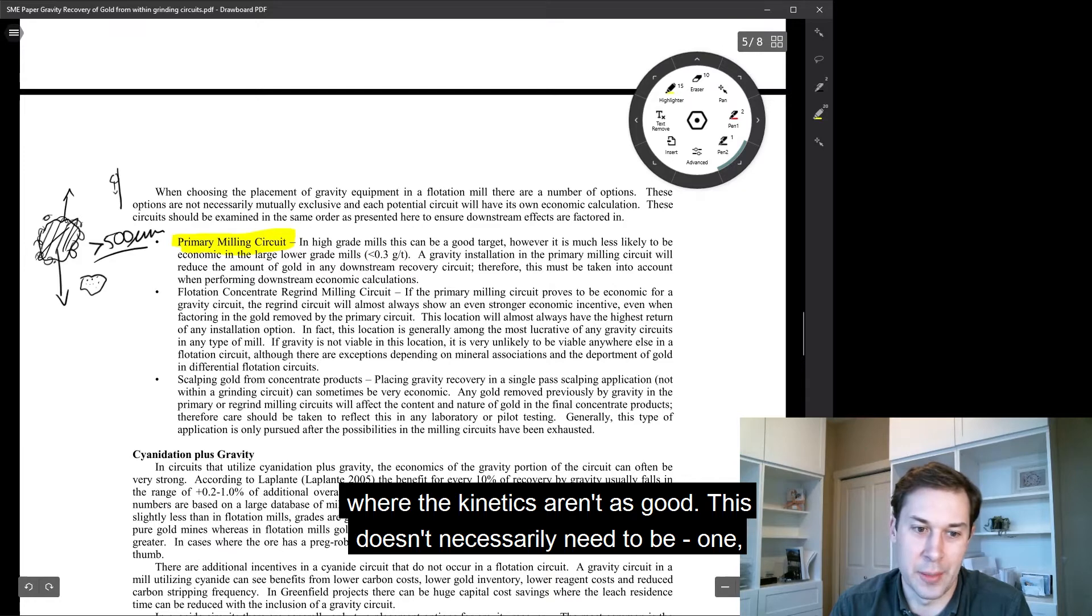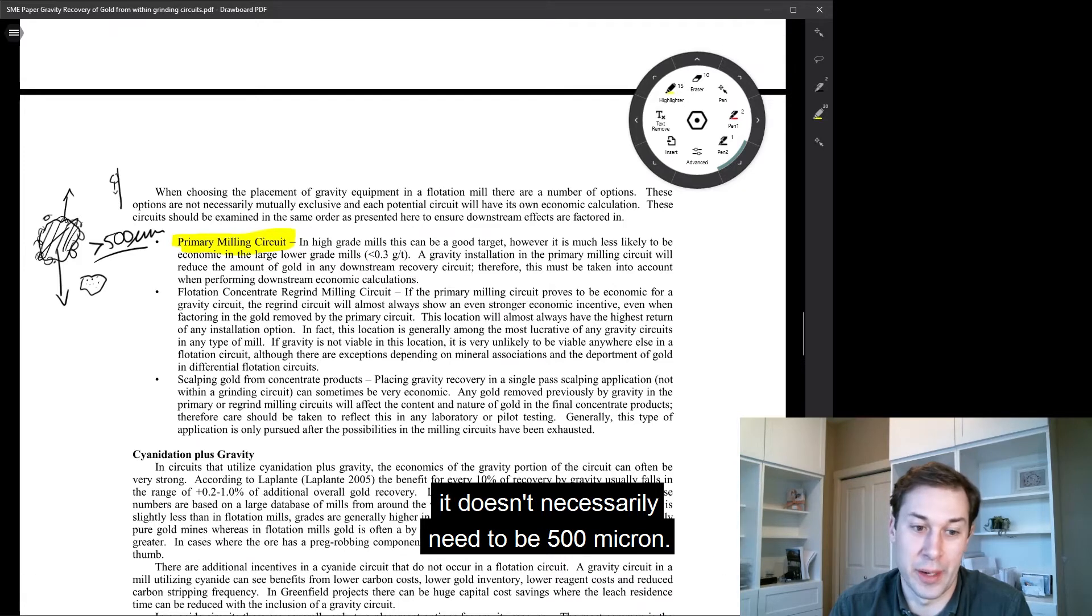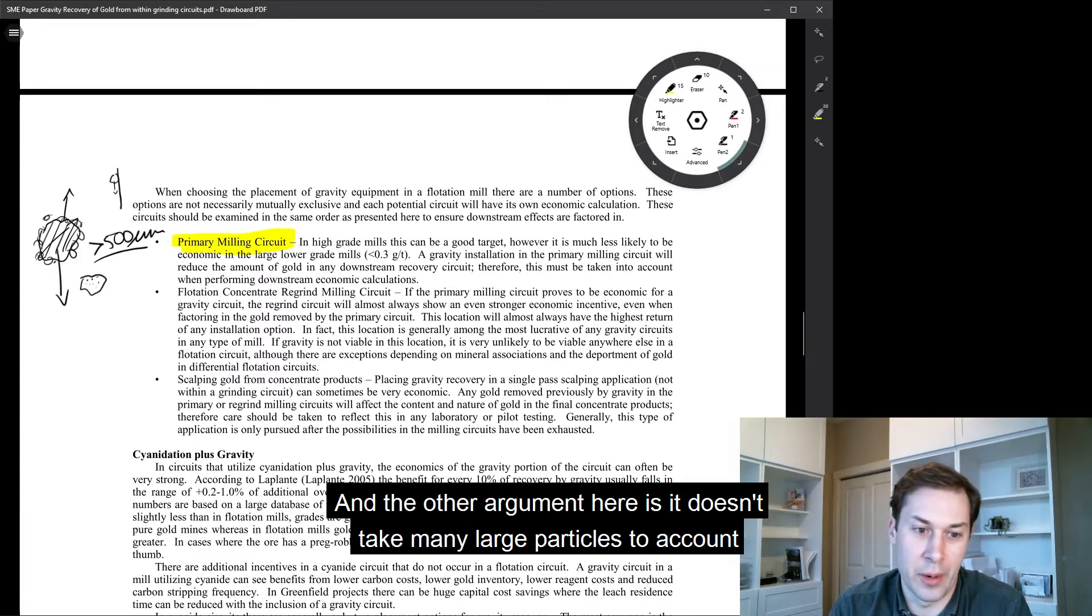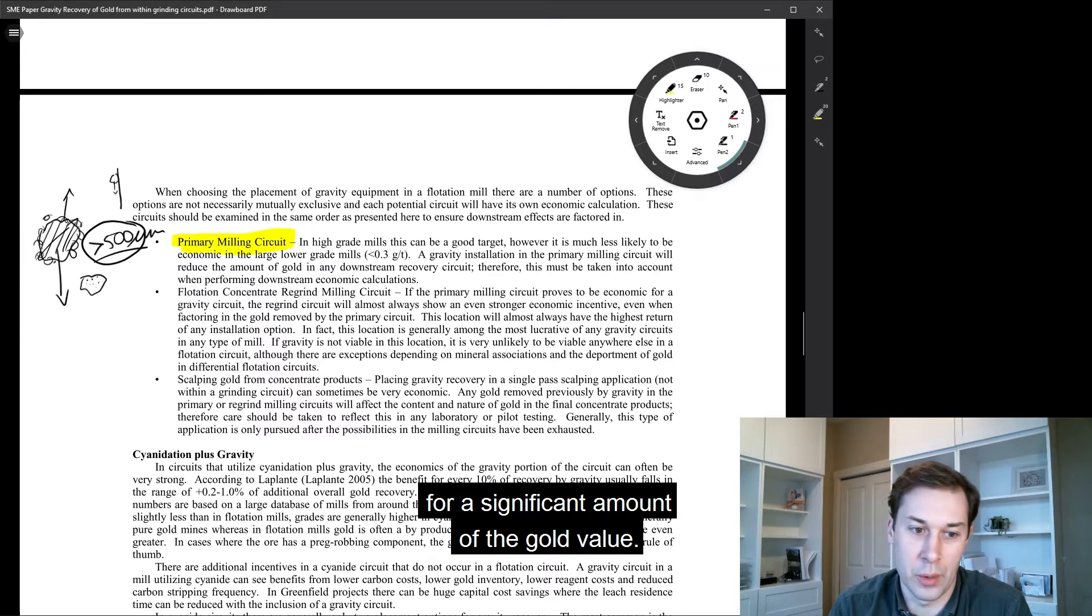And this doesn't necessarily need to be 500 micron. This could be much smaller than this. And the other argument here is it doesn't take many large particles to account for a significant amount of the gold value that you might be seeing in free gold incoming to the circuit.